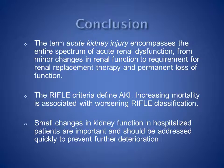In conclusion, the term acute kidney injury encompasses the entire spectrum of acute renal dysfunction from whatever cause, from minor changes in renal function to requirement for renal replacement therapy and permanent loss of function. The RIFLE criteria are used to define acute kidney injury, and increasing mortality is associated with worsening RIFLE classification in critically ill patients. Small changes in kidney function in hospitalised patients are important and should be addressed, if possible, to prevent further deterioration.